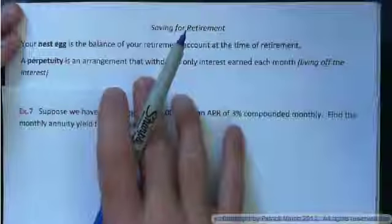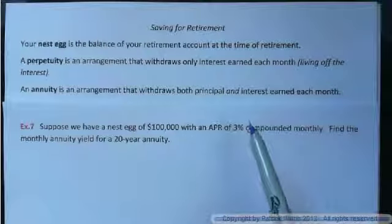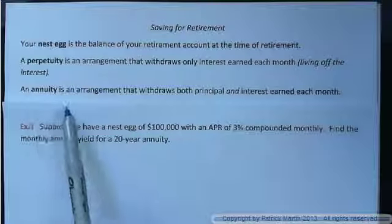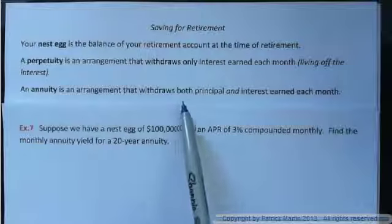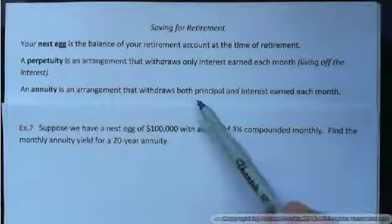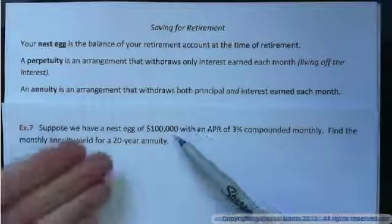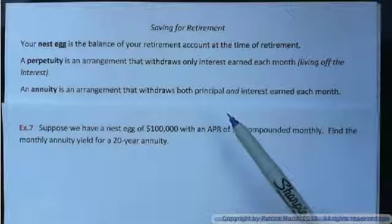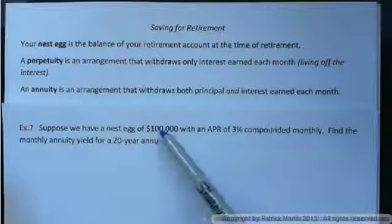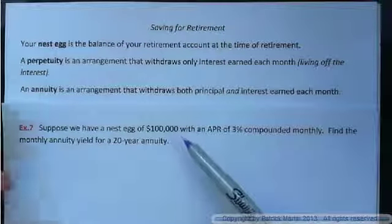What's much more common would be an annuity. With an annuity, you live off some interest because it earns interest, but you also draw down the principal — your nest egg. An annuity is an arrangement that withdraws both principal and interest earned each month. So you're taking out a certain amount of your $100,000, and while you're retired at age 66, 67, 68, that big nest egg is accumulating interest. You're getting money from interest and also from the $100,000 principal itself.